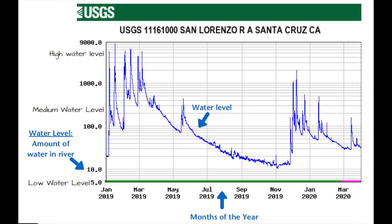Scientists didn't just measure how much water is there one time — they come back month after month. And that's what you see at the bottom of this hydrograph. You see the months starting with January 2019, March 2019, ending up with March 2020.